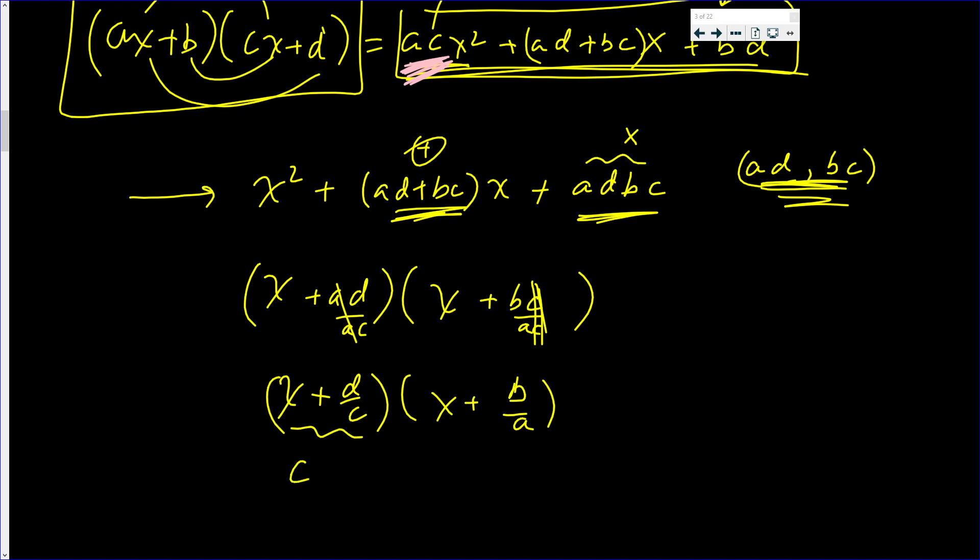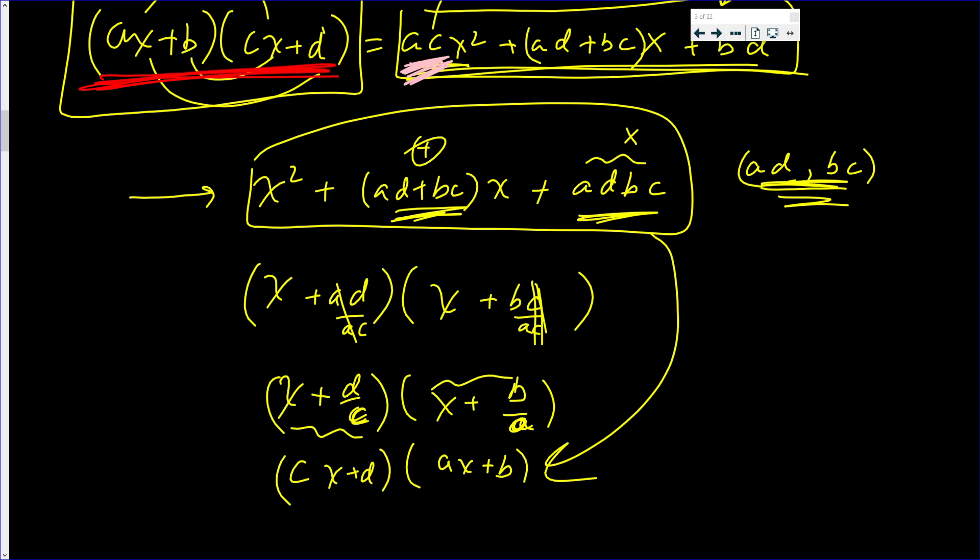Multiply this by C, you get Cx + D. Multiply what's in here by A, you get Ax + B. And this here equals that. And yep, I am right. That's exactly what we were supposed to get.